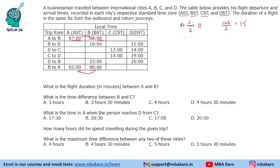So the journey from A to B is 1 and a half hours. If he starts from A at 7, he should reach B at 8:30. But the time at B is 8 a.m., which means B is 30 minutes behind A. So the time zone difference between A and B is 30 minutes.